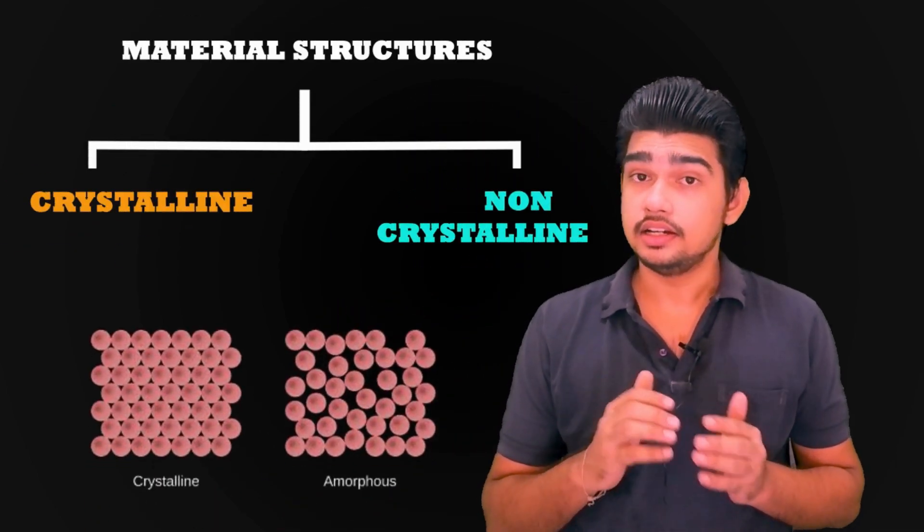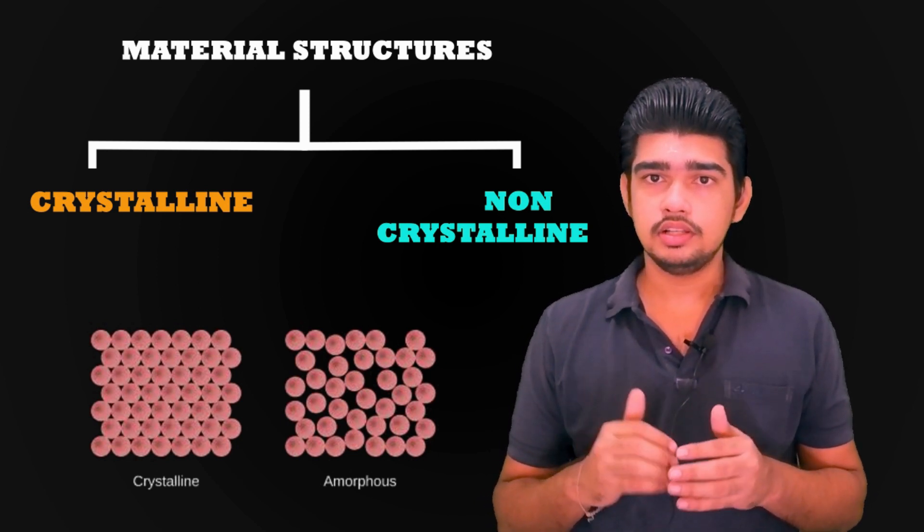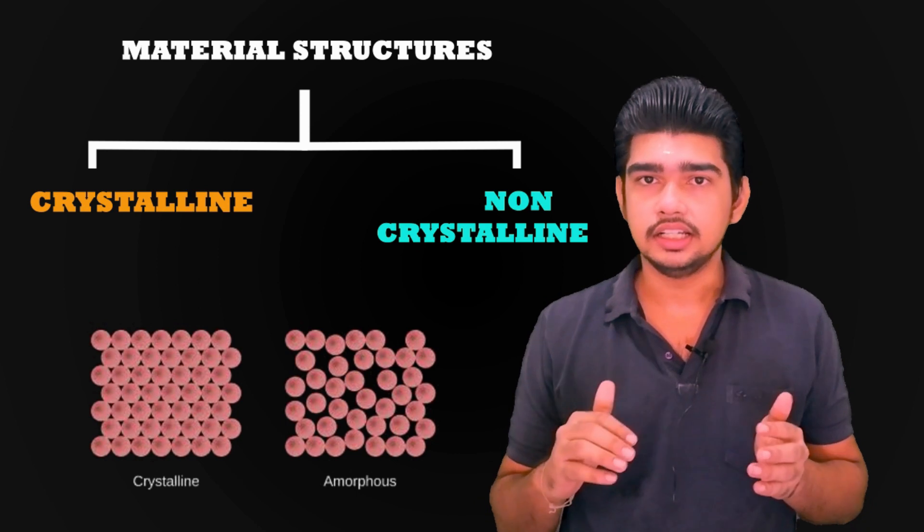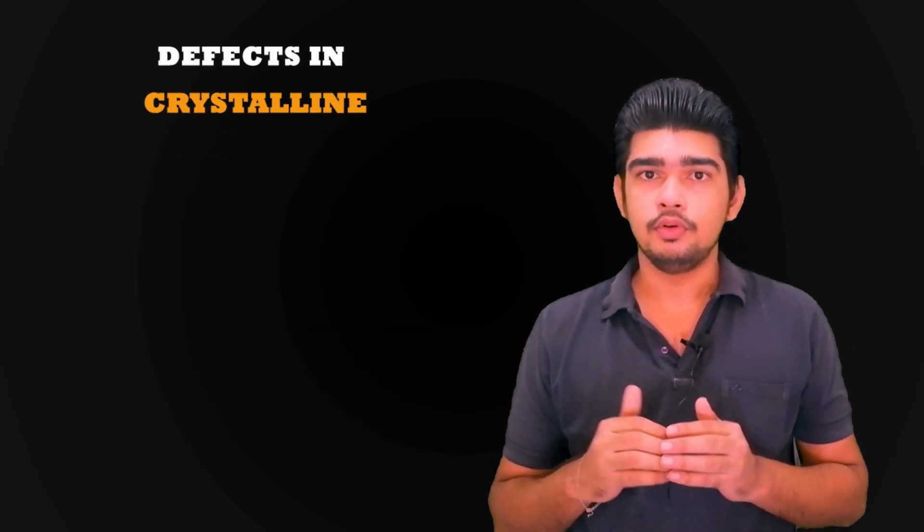Two fundamentally different material structures can be distinguished. One is crystalline that is orderly and the next one is non-crystalline, also known as amorphous, not orderly. First, let's see about crystalline structure.